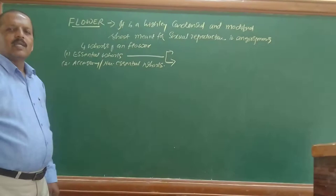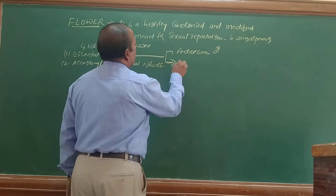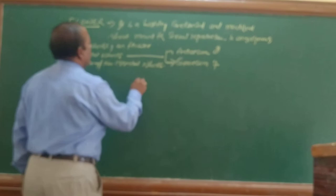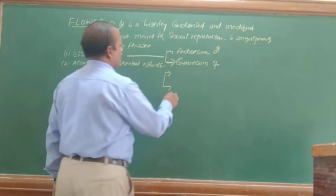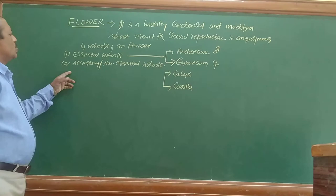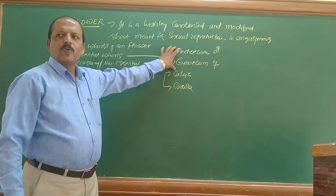The essential whorls are the sex organs — androecium and gynoecium. Androecium is the male reproductive structure, and gynoecium is the female reproductive structure. The accessory or non-essential whorls are two: calyx and corolla. Calyx and corolla are the two non-essential whorls.